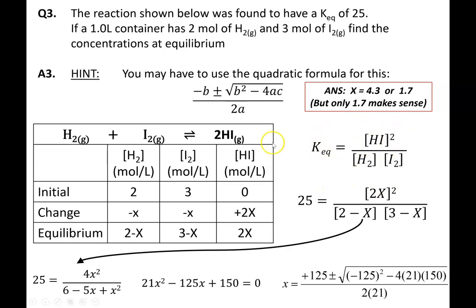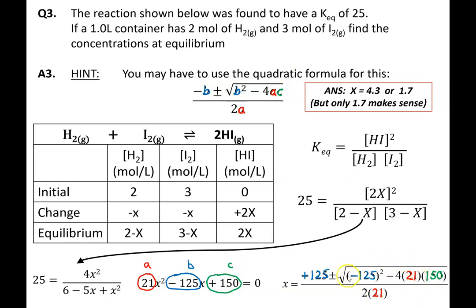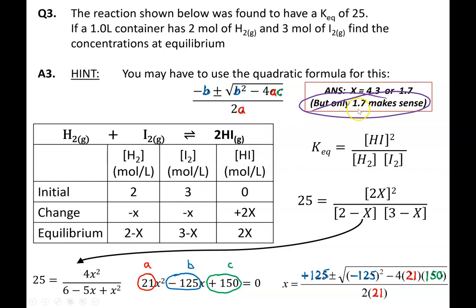Writing the equilibrium expression — products over reactants with the coefficient as an exponent — and plugging in Keq = 25 along with the ICE chart values, I expand and collect like terms into standard quadratic form. This gives a, b, and c values: a = (coefficient), b = −1.25, and c = 150. Solving the quadratic yields two answers: 4.3 or 1.7. However, 4.3 is not possible because 2 − 4.3 and 3 − 4.3 are both negative, and negative concentration at equilibrium makes no sense.